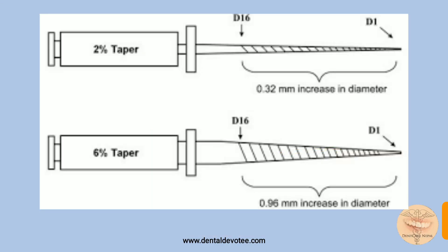The taper can be 2%, 4%, 6%, or an uneven taper, which is also found in rotary file instruments. A 2% taper means every millimeter up towards the handle, the diameter increases by 0.02 mm, so at D16 the diameter will be 0.32 mm more than at the tip. A 6% taper means the diameter increases by 0.06 mm per millimeter.